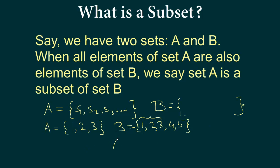So the special way of representing it, we write: set A is a subset of set B. This symbol is like an uppercase letter C with the top and bottom squished to make it more parallel. This symbol is used to say set A is a subset of set B, and this happens if and only if all elements of A are also elements of set B.